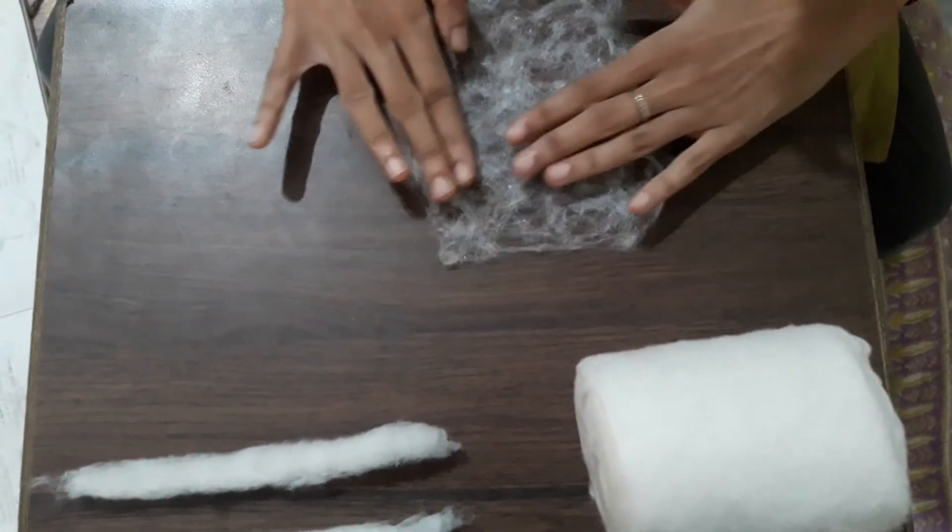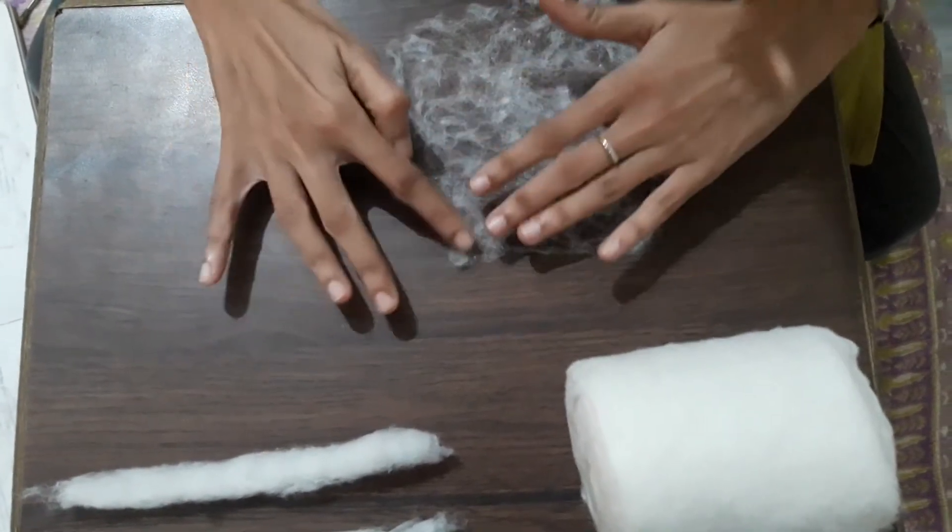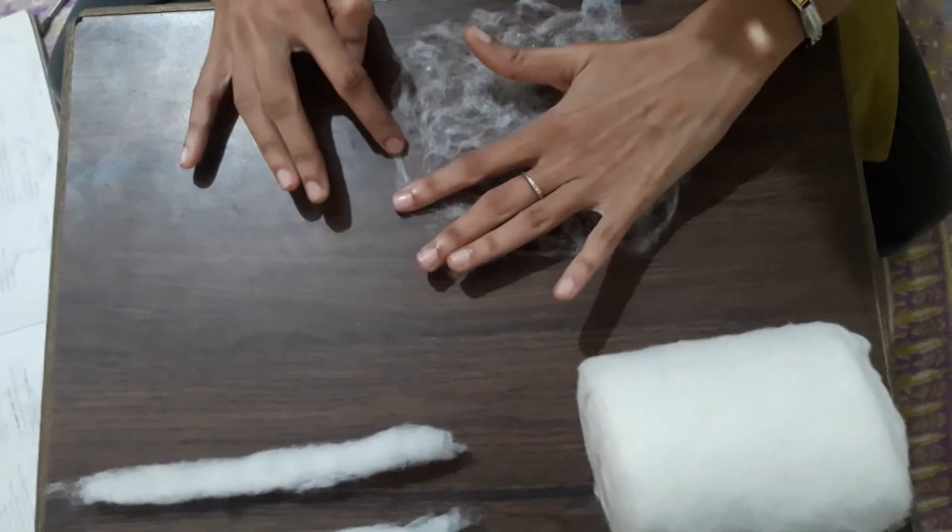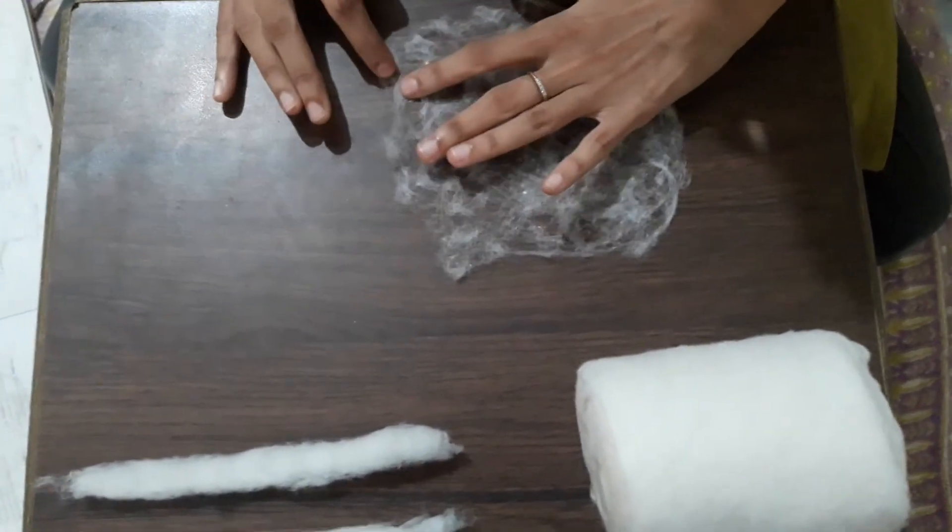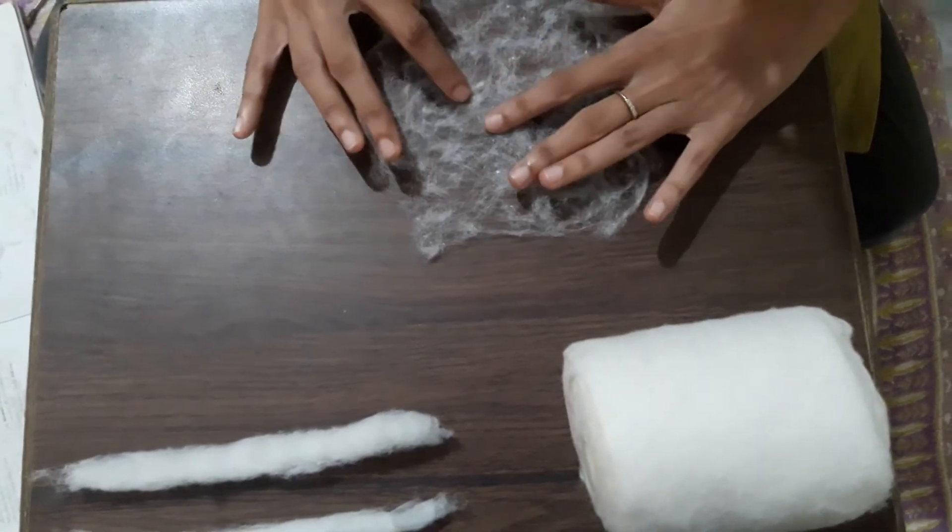So here I have again spread this out. It's good to have a flat table, preferably a dark colored background, so that you can see how your fibers are moving. You can easily see if there are any clumps.